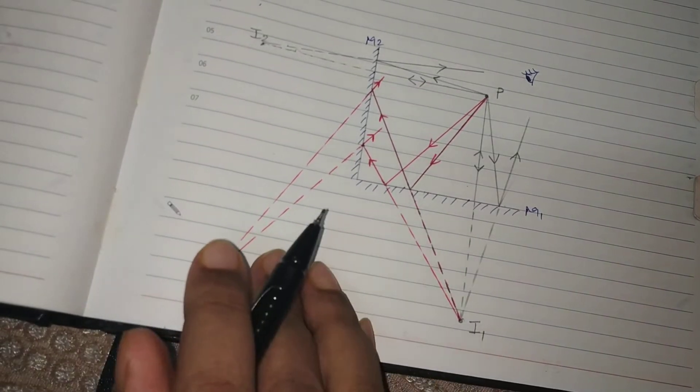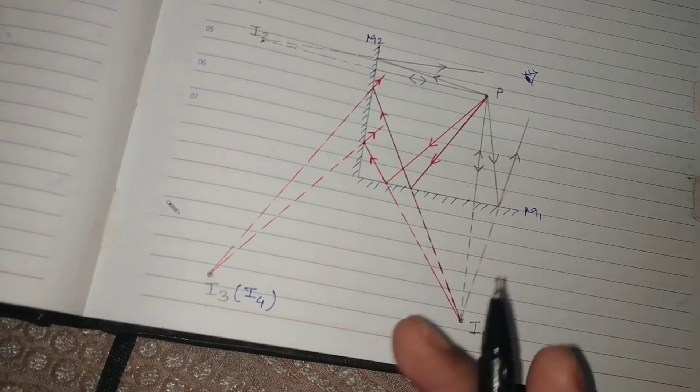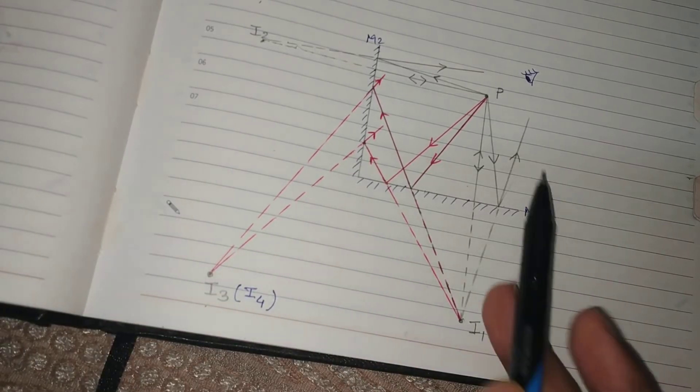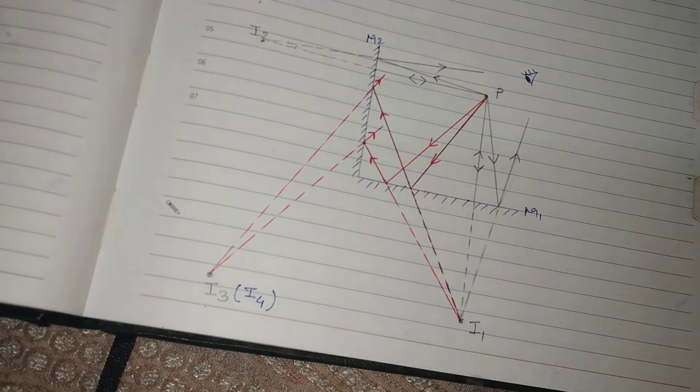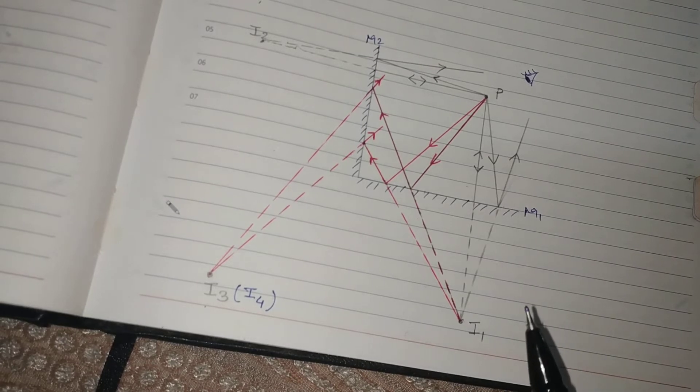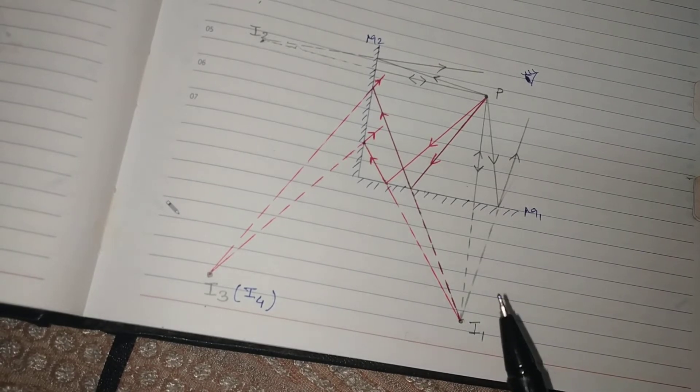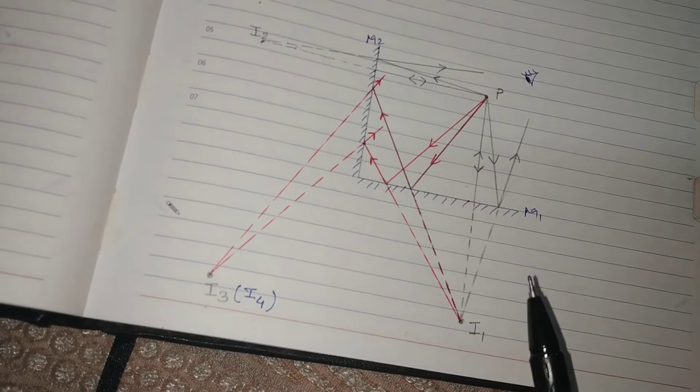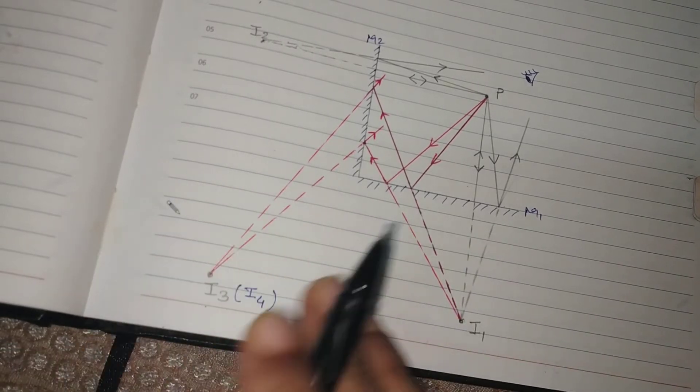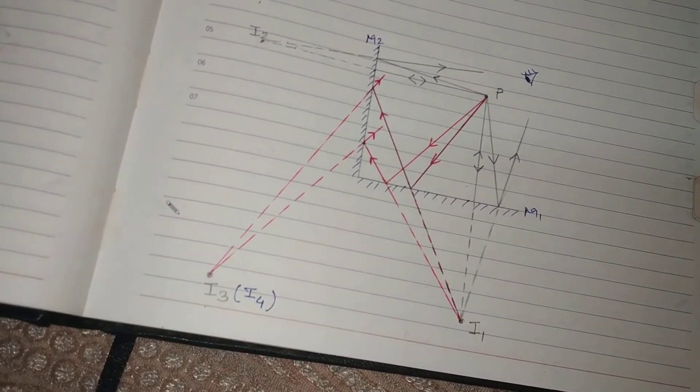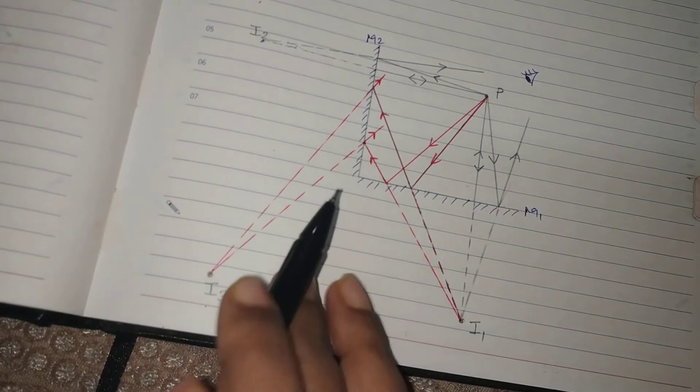Children, the diagram in the book is little different. So it's your choice. Either you practice this one or you practice the ray diagram which is given in the book. But make sure that your concepts are clear. So that is all about the image formation under this situation.